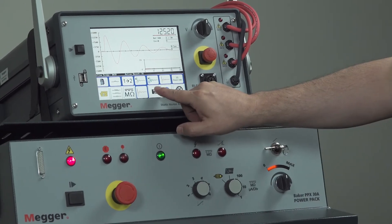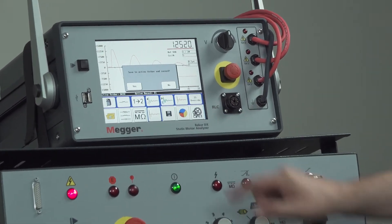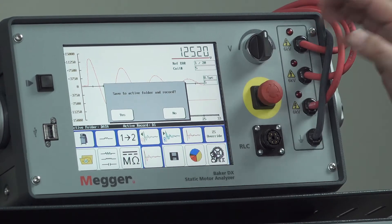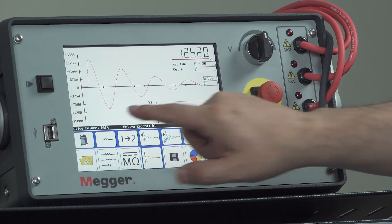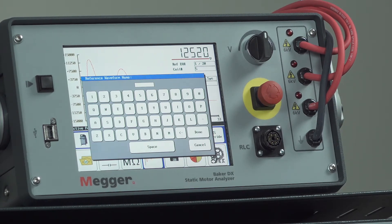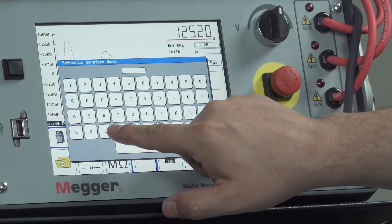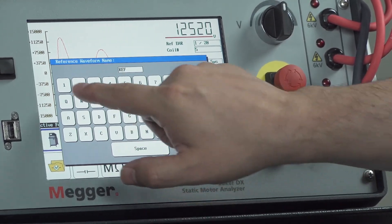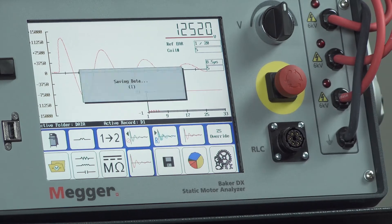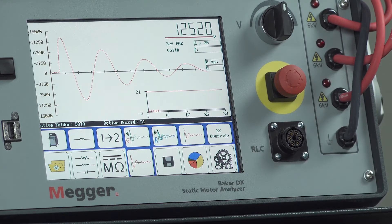And then, of course, when you're done, you want to make sure you hit that save button, save to the active record, or select another folder and record. Here it's asking you to save the reference waveform. So I'm just going to call this REF1, hit Done, and it saves the data, and we're all complete.